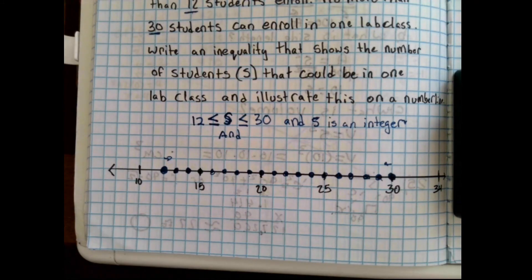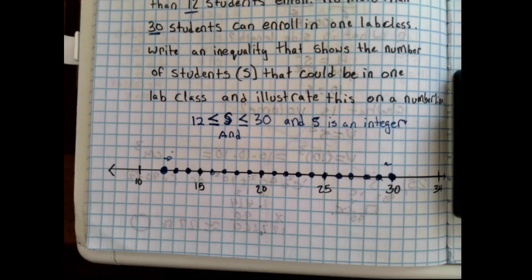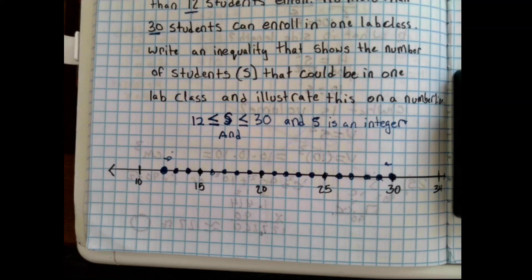So, this is just one example of one of the ways they could throw a curveball at you with one of these problems. Try to make sure that you're being realistic with word problems having to do with inequalities. If it's something to do with people, you can't have a decimal of a person. So, make sure that you're only including people as whole people when you are writing inequalities about students and things along those lines.